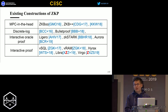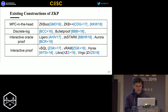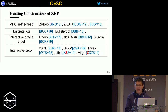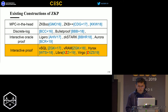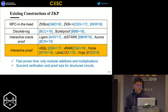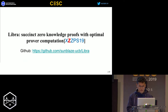In order to solve these problems in zk-SNARKs, several zero-knowledge proof protocols have been proposed in recent years. These constructions are based on different cryptographic models, including MPC-in-the-head, discrete log, interactive oracle proof, and interactive proof. We also propose two protocols, Libra and the follow-up work Virgo, both in the category of interactive proof, with the fastest prover time, verification time, and proof size for structured circuits.